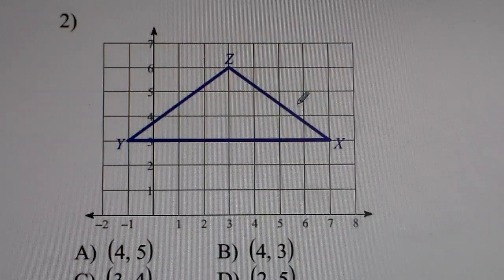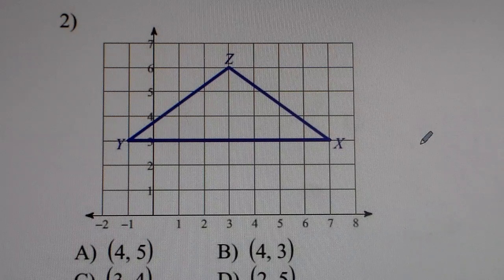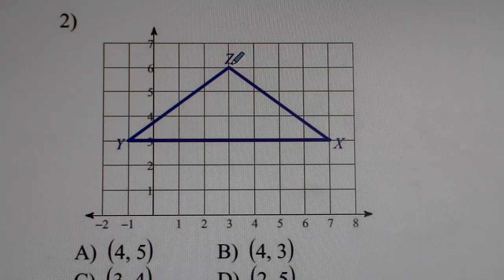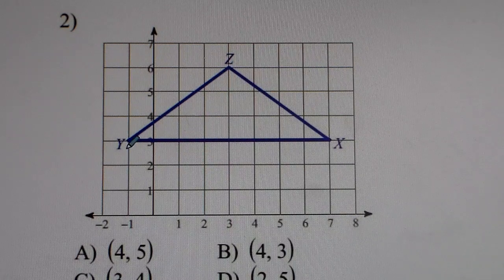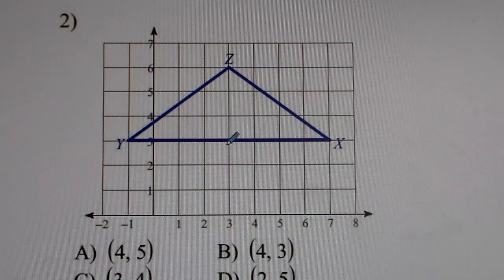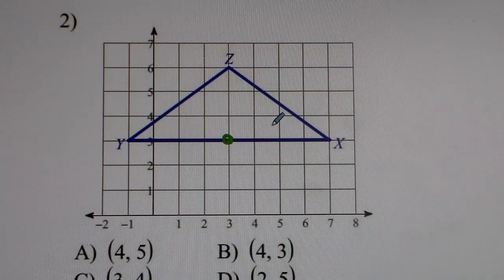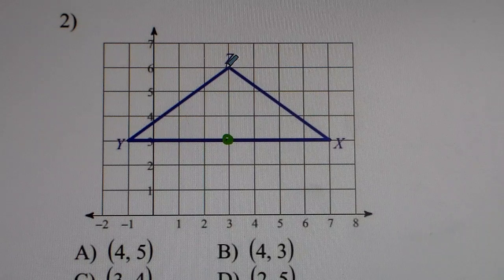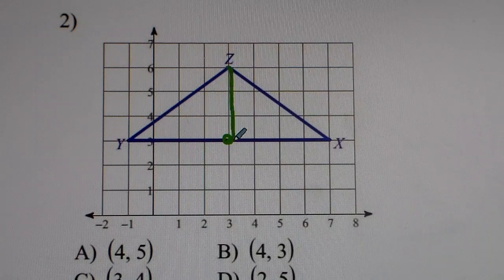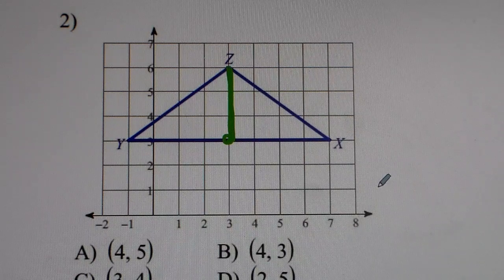Let's try another problem, problem number two. This time I'll do it in green. Z, we're going to draw the median that touches Z. So we look at Y, X. We find the middle between Y and X. That looks like it's around here. So I put a dot there, and then I connect Z to that dot. And that's my median.